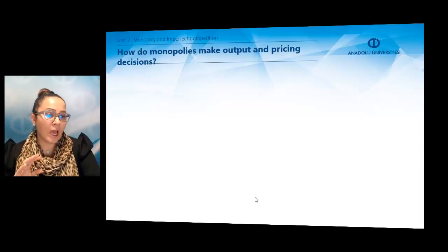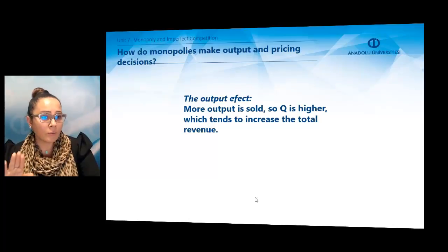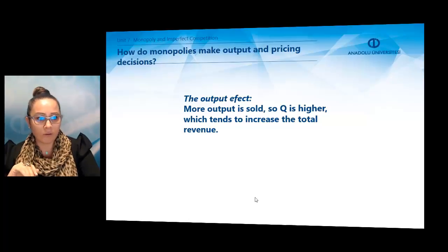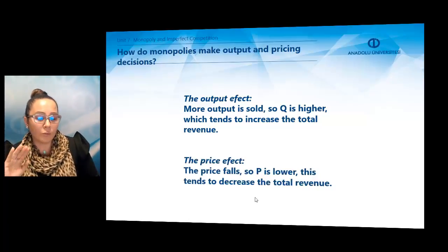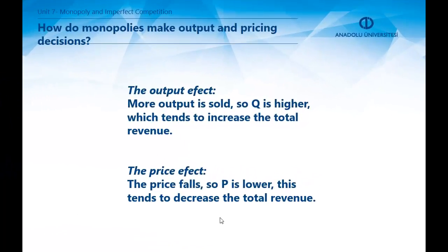How do monopolies make output and pricing decisions? First, consider the output effect and the price effect. The output effect means more output is sold, so quantity is higher, which tends to increase total revenue. The price effect means price falls, so P is lower, which tends to decrease total revenue. Since the monopoly is the only producer, it faces a downward-sloping market demand curve and must trade off selling at a higher price with a smaller quantity or a larger quantity at a lower price.